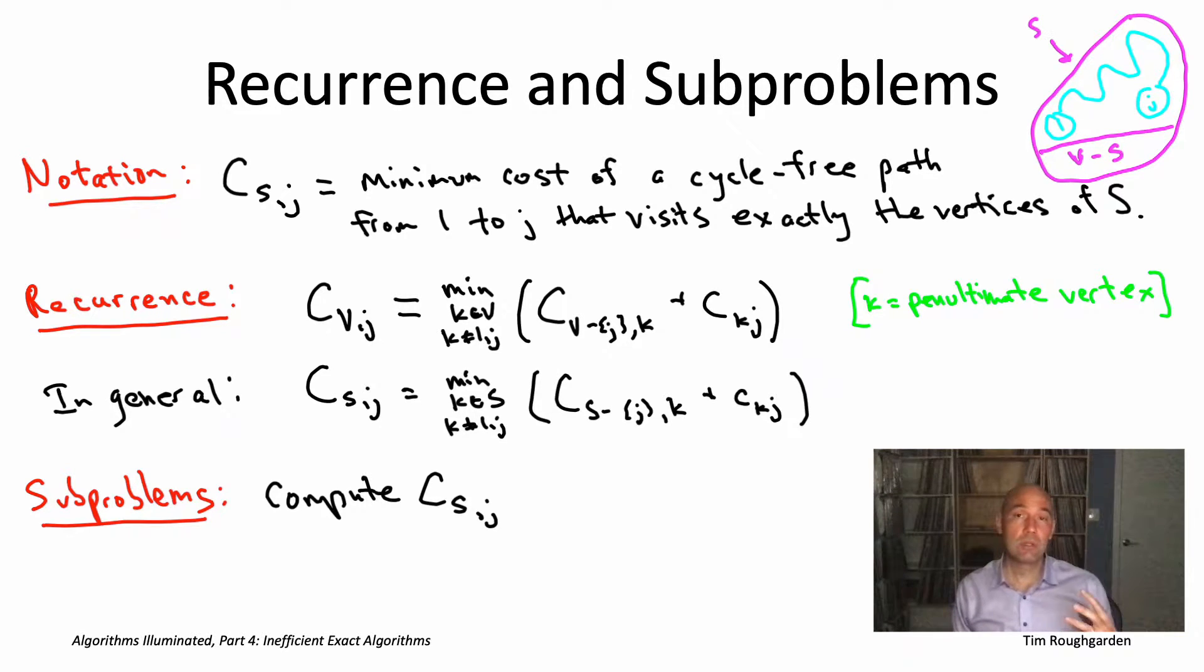Well, remember capital S, those are the vertices that the path is supposed to visit. And the path's supposed to start at vertex one. So the set capital S better include the vertex one. Also remember J, that's where the path ends. So capital S better also include the end point J. So you're going to have one of these terms for each choice of J and each choice of capital S that includes both vertex one and that choice of the end point J.